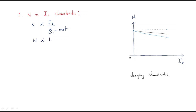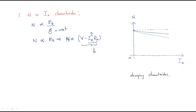Speed is proportional to V minus IaRa. As armature current increases from zero, the voltage is constant but the IaRa drop increases, so the overall back EMF slightly decreases. This gives an ideal straight line where speed is nearly constant as armature current varies.